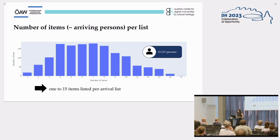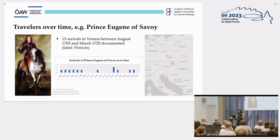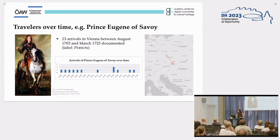Among all these arrivals, there were also travelers who entered Vienna several times in the early 18th century. One such person who appears multiple times is Prince Eugene of Savoy, for whom 13 arrivals between August 1703 and March 1725 were documented. As you can see from the figures on the slide, he was documented at the gates of Vienna once a year between 1703 and 1708, and from time to time in later years. He reached the city from various points of departure, among them Hamburg, Hannover, Milano, Prague, and Leutschau.